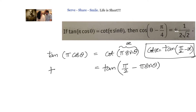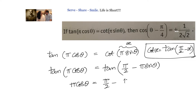Now we can see that we have tan on both the left hand side and right hand side, so we can remove that. We will have π cosθ equals π/2 minus π sinθ. Now let us get π sinθ to this side — we will have π sinθ plus π cosθ equals π/2.